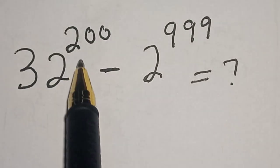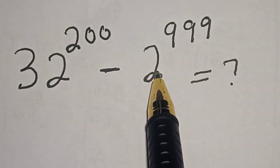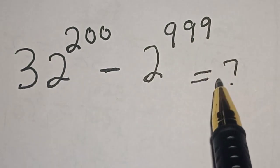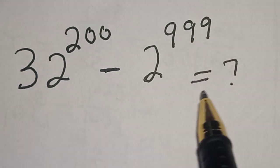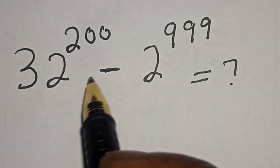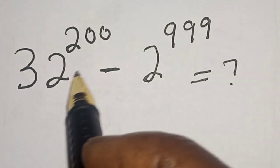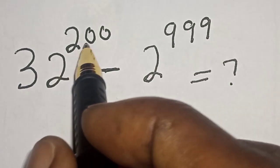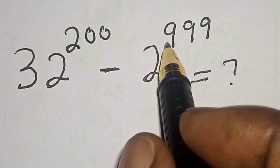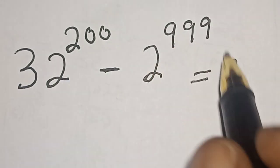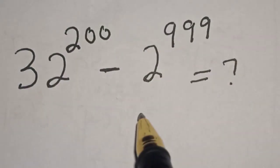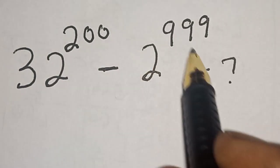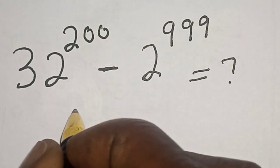32 raised to power 200 minus 2 raised to power 999 is equal to what? Hi everyone, welcome to my class. In this class we want to solve this math problem without using a calculator: 32 raised to power 200 minus 2 raised to power 999. Before we proceed, please don't forget to like, share, comment and subscribe. Thank you.